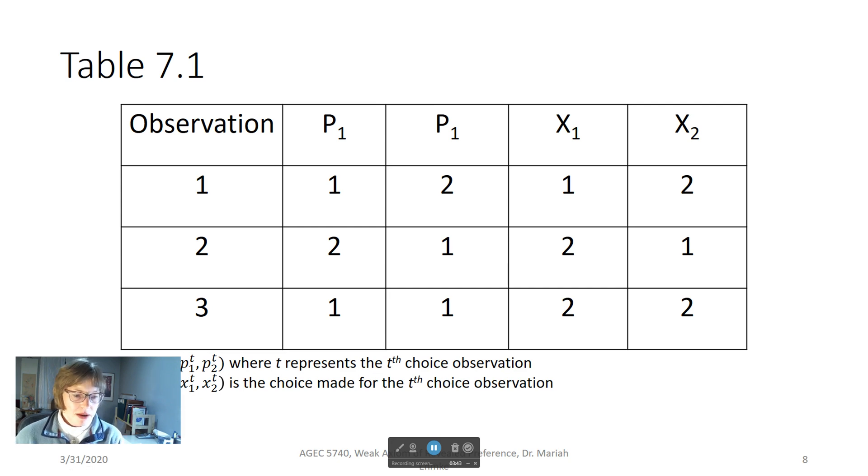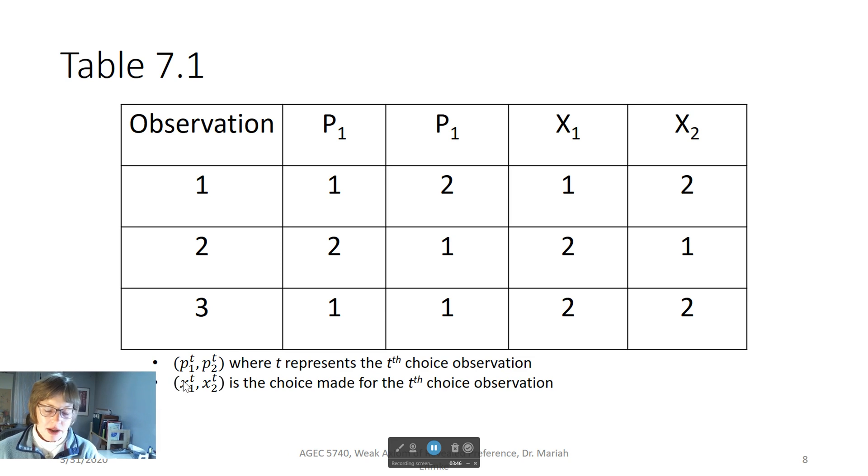Suppose a set of goods with the prices I have listed below here, in this area down here, where the set of prices are represented by P1 to the T and P2 to the T, where T represents the Tth choice observation. And we have them as X1 to the Tth and X2 to the Tth, where those are the choices made for the Tth choice observation. This should actually be P2 right here, not P1.